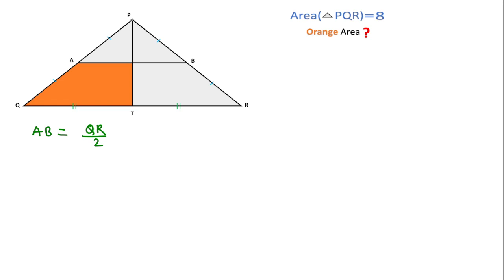Now by formula we can write area of triangle PQR, that is 1/2 into base QR and height PT, which is equal to 8. This means QR into PT is equal to 16.